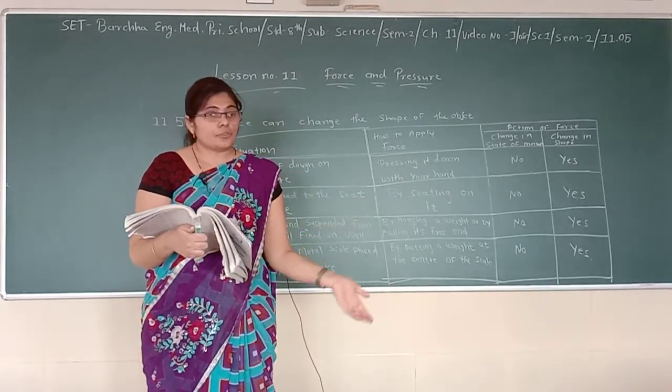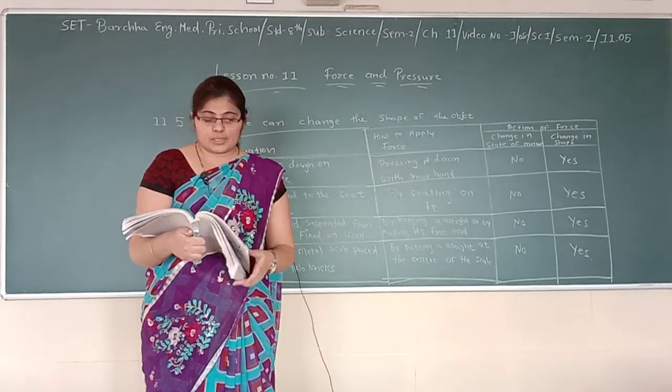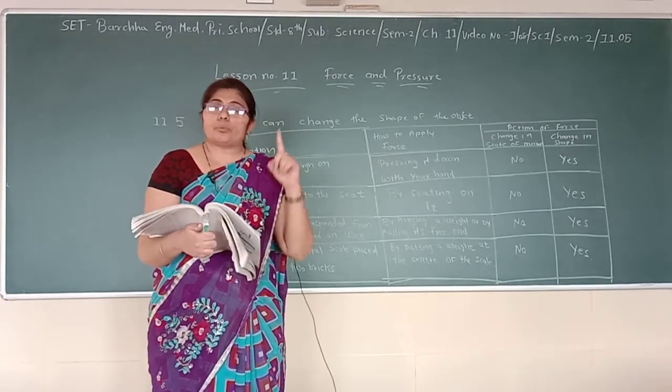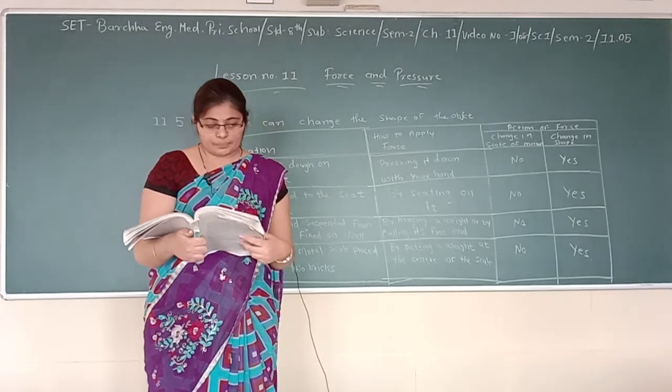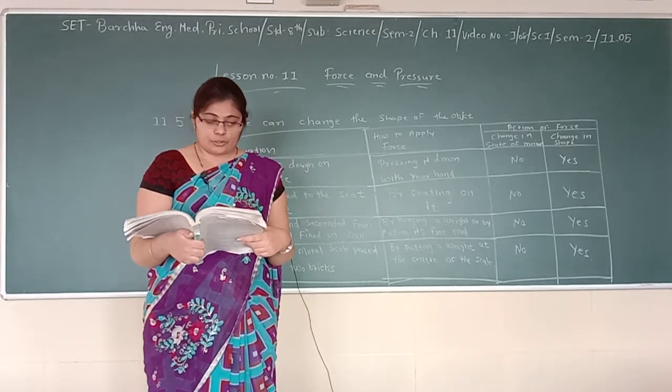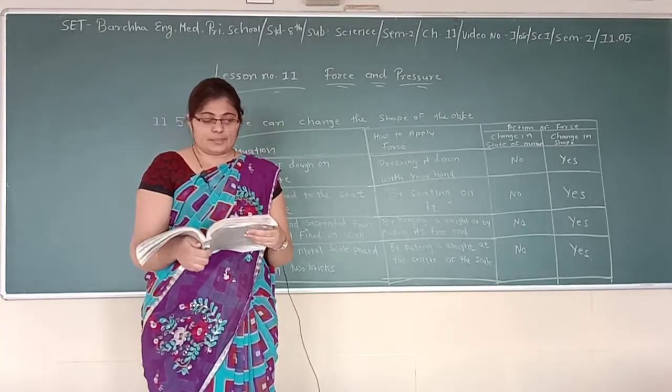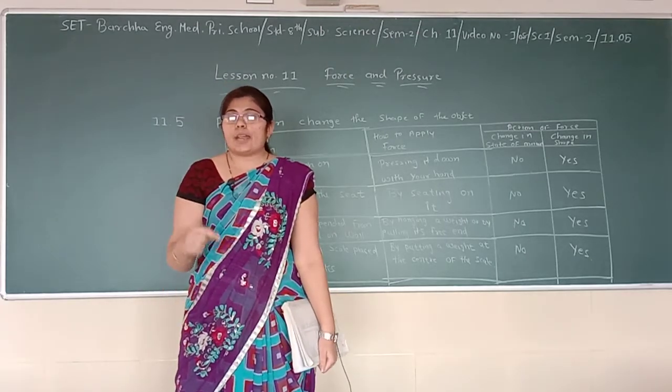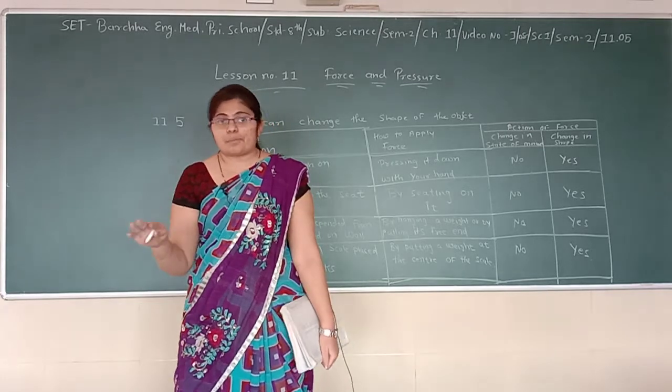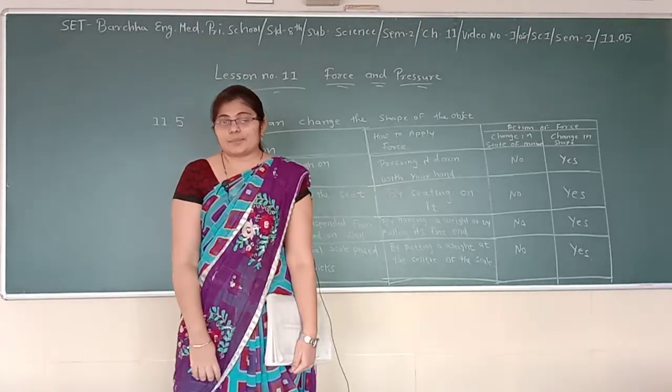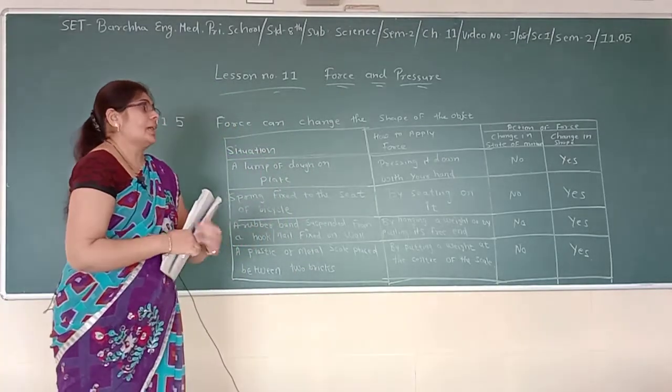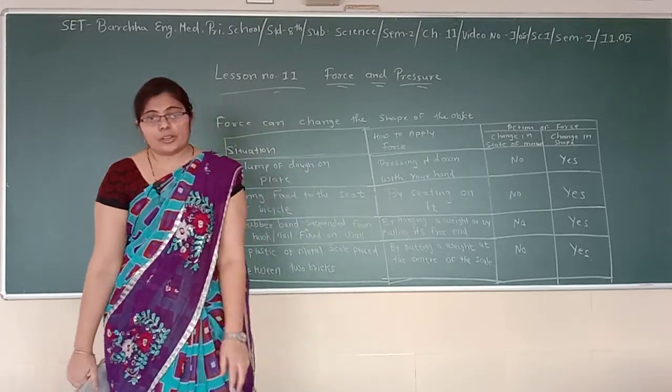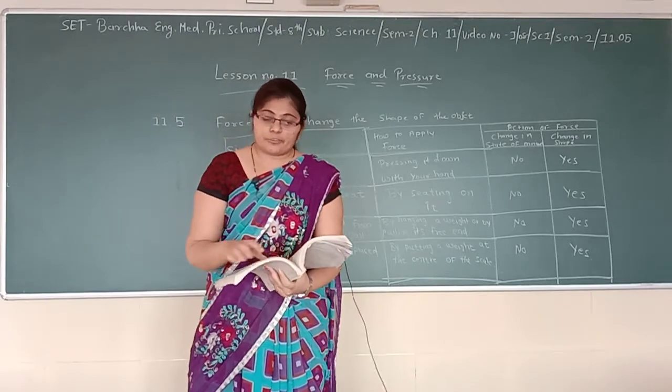Thus, an object cannot move by itself. It cannot change its speed by itself. It cannot change the direction by itself, and its shape cannot be changed by itself. Without giving a force, speed, shape, motion, and direction cannot change by themselves. What do you learn from this? You have learned that force is applied to change the shape of an object. There are some situations in the examples also given here, so Activity 11.5 is also over.